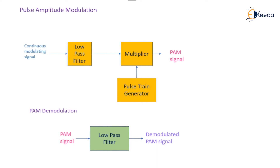Then it is coupled to the multiplier. The multiplier is operated with the pulse train generator, where the carrier pulses are applied. As per the modulating signal, the amplitude of the carrier pulses will be changed accordingly.